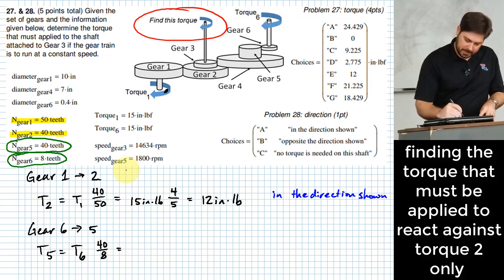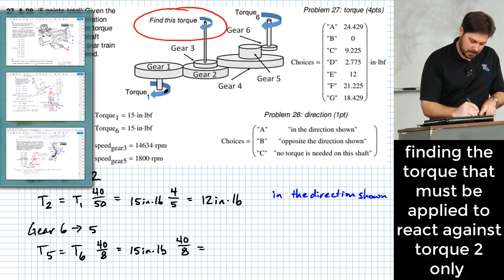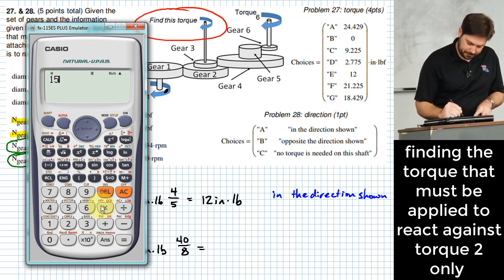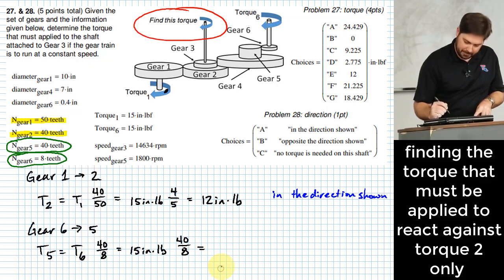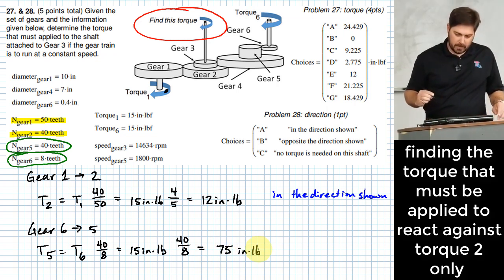Okay. So T six, let me say that's a 15 inch pounds also times 40 over eight. And this gives us 75. Great.